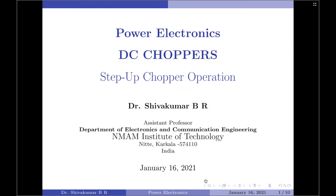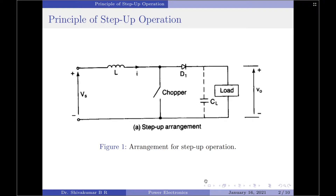Hello everyone, welcome to Power Electronics. In this session I'm going to discuss the step-up chopper operation. A step-up chopper is a static device whose average output DC voltage is greater than its input DC voltage. The arrangement shown in the slide consists of an inductor in series with the supply voltage that helps increase the output voltage. The chopper switch can be implemented using any power device such as a power BJT, power MOSFET, SCR, IGBT, etc. The diode D1 ensures power transfer is from source to load only, and prevents the source from being damaged by load current.